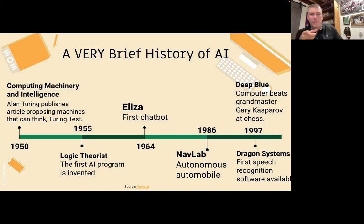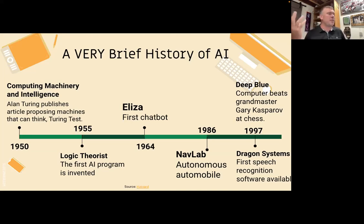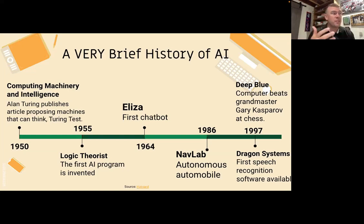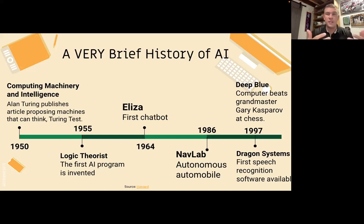So 1950 — here is our brief history of AI. The first example of machine and computing intelligence comes from Alan Turing, who published an article suggesting that machines can think for themselves — he called this the Turing Test. Then in 1955 we get our first real program, called the Logic Theorist, which used logic-based learning to predict what the inputted user wanted. It was using logic theory — because this equals this equals that — and it could do that as early as 1955.